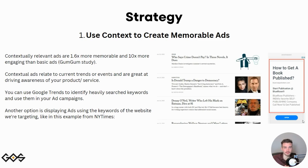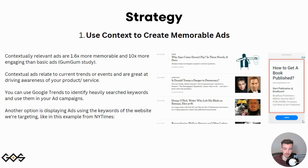Now let's get into strategy. The first strategy is to use context to create memorable ads. Contextually relevant ads are 1.6 times more memorable and 10 times more engaging than basic ads, according to a GumGum study. Contextual ads relate to current trends or events and are great at driving awareness. You can use Google Trends to identify heavily searched keywords and use them in your campaigns. For example, displaying an ad about 'how to get a book published' on the New York Times website is contextually relevant and more likely to get engagement.